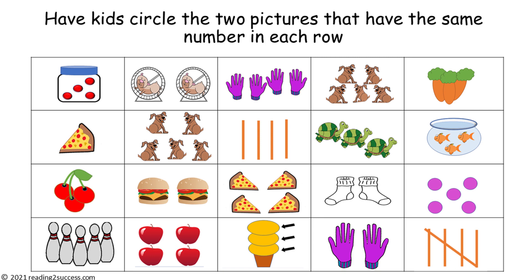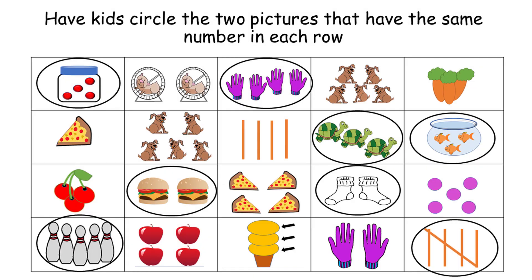Now have kids circle the two pictures that have the same number in each row. In the first row, the four dots and four mittens were circled. In the second row, the three turtles and three fish were circled. In the third row, two hamburgers and two socks were circled. And in the last row, five bowling pins and five orange tally marks were circled.